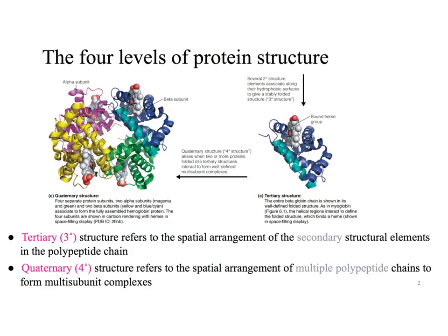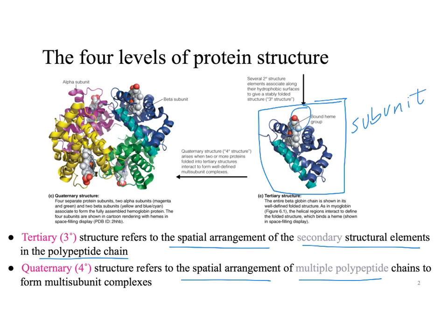Okay, so here's a nicer representation of this. Down here, tertiary structure refers to the spatial arrangement of secondary structural elements in the polypeptide chain. Quaternary structure refers to the spatial arrangement of multiple polypeptide chains. So here is a single polypeptide. We might call this a subunit. If you put multiples of these together, you can see here's one in green, one in yellow, one in pink, and one in blue. This is its quaternary structure arrangement.